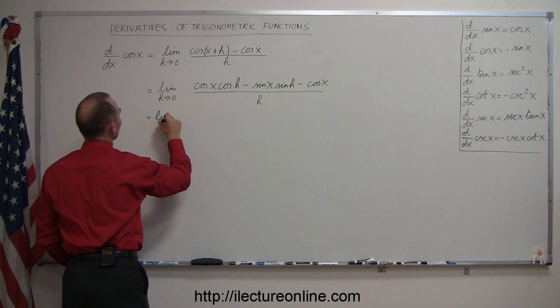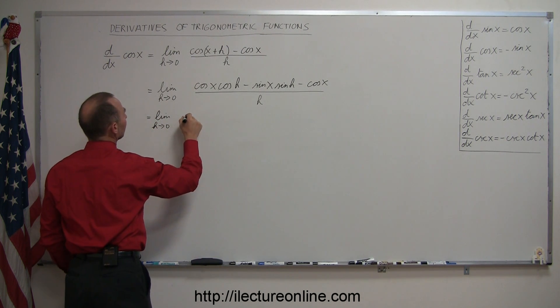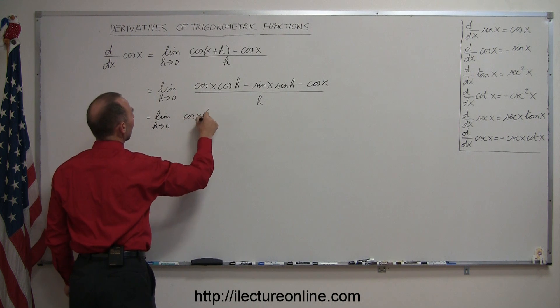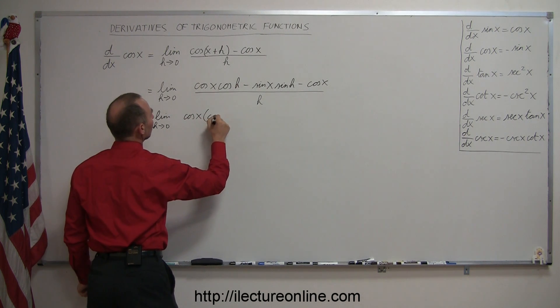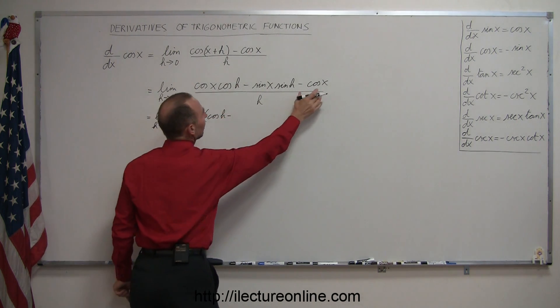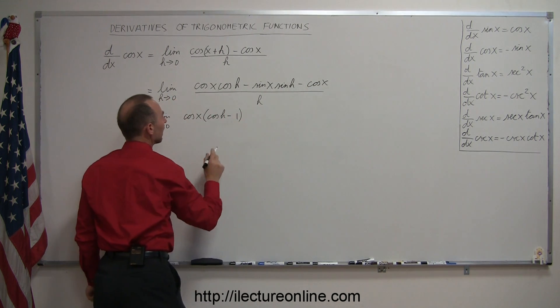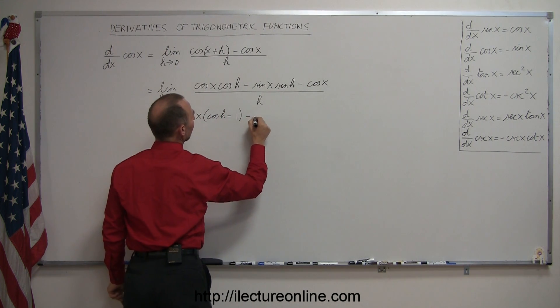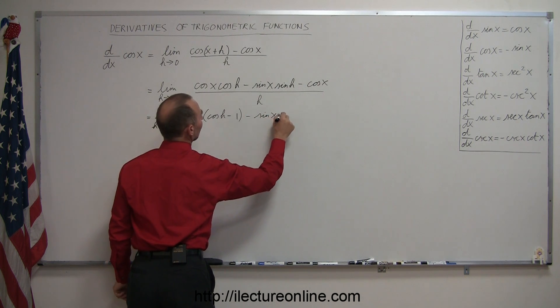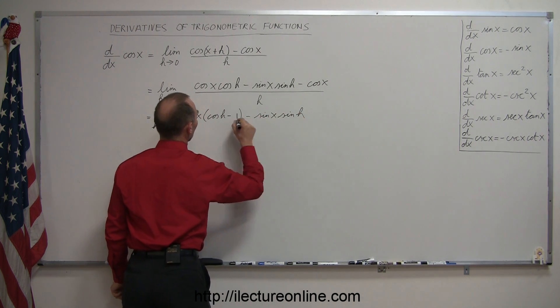So this is equal to the limit as h goes to zero of the cosine of x times, we have the cosine of h minus, if you factor out a cosine of x there, you get one. We still have minus the sine of x times the sine of h, all over h.